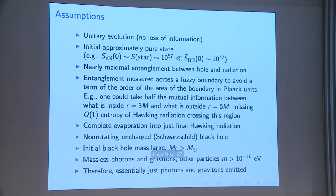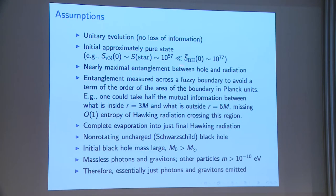I'll assume unitarity and maximal information return — the black hole goes away with no remnant. I'll assume an initial approximately pure state: if formed from a star, the star's entropy is about 20 orders of magnitude bigger than the Bekenstein-Hawking entropy of the resulting black hole, but the number of states of the black hole is enormously larger. So we assume the black hole is actually in a tiny subset of those states. I'll assume nearly maximal entanglement between the hole and the radiation.